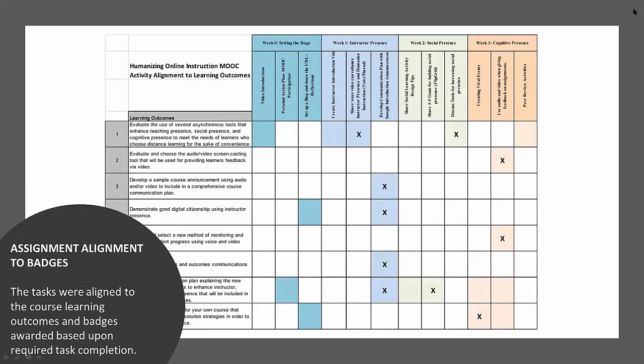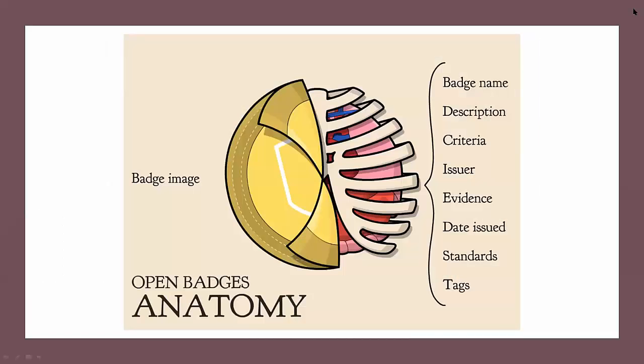After aligning the objectives with the Penn State competencies, we took those same criteria and looked at the activities in the course, then decided what was required in order for badges to be earned. It was a great way of double-checking ourselves to make sure we were putting things together in a way that was really meaningful so the badges had value. The funny thing about badges is sometimes they don't mean anything — they're for completion by clicking through something. We wanted them to have real value and meaning.